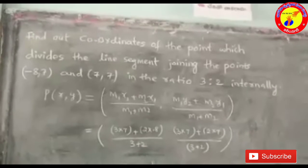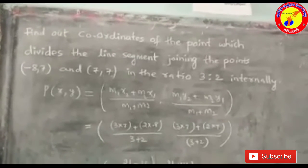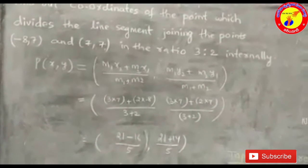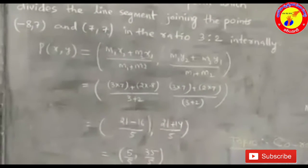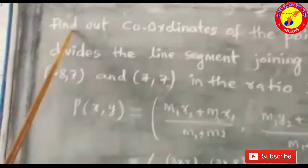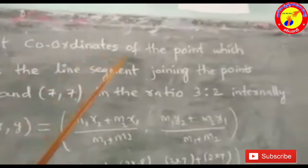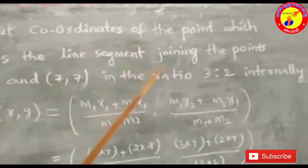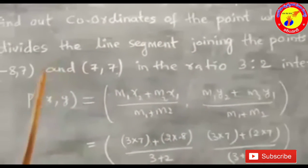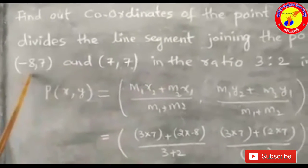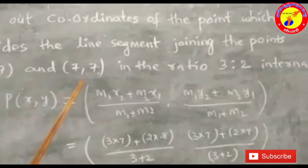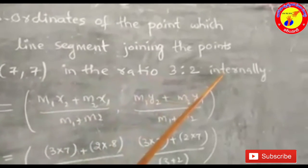To illustrate the idea of my new concept, I want to take an example and I will solve that in both methods. Find out coordinates of the point which divides the line segment joining the points (-8, 7) and (7, 7) in the ratio 3:2 internally.